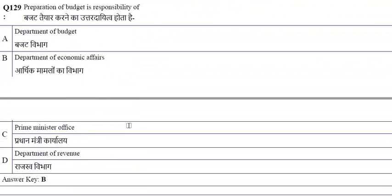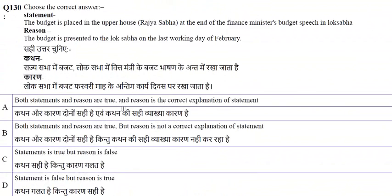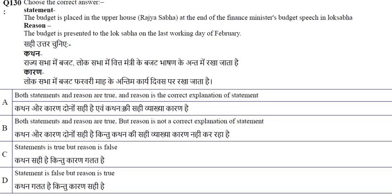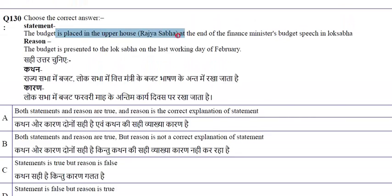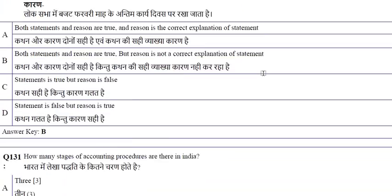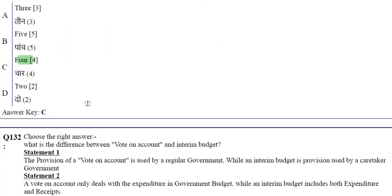The preparation of the budget is the responsibility of the Department of Economic Affairs. The budget is placed in the Lok Sabha by the Finance Minister on the last working day of February. Both statements are true, but the reason is not the correct explanation of the statement. There are four stages of accounting procedure in India.